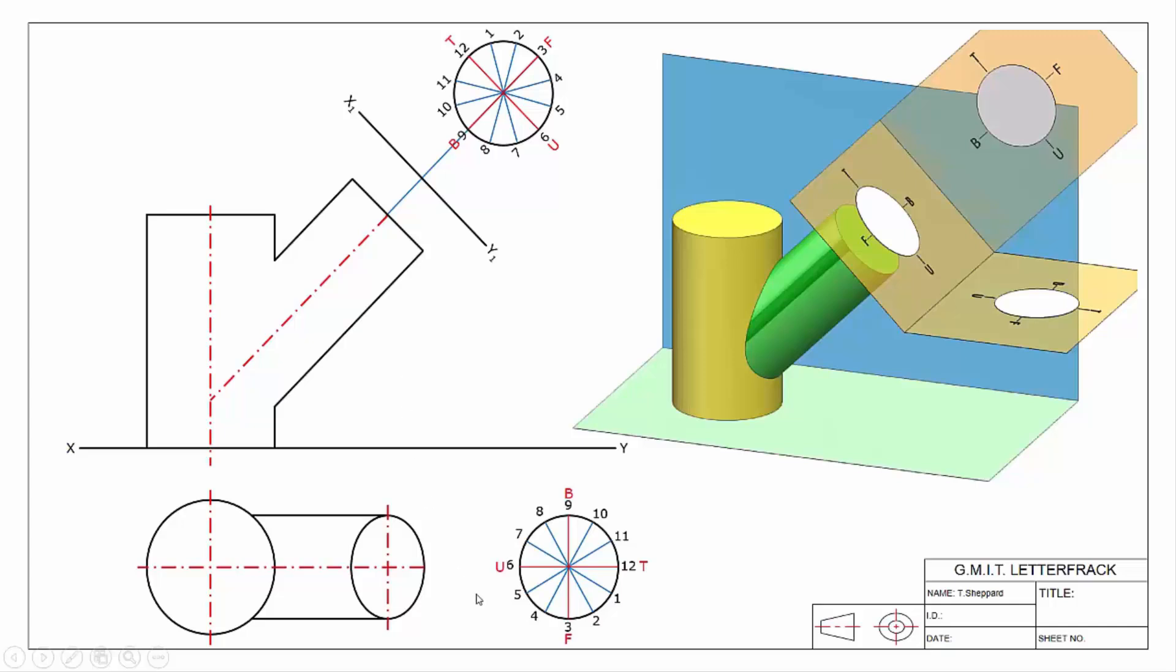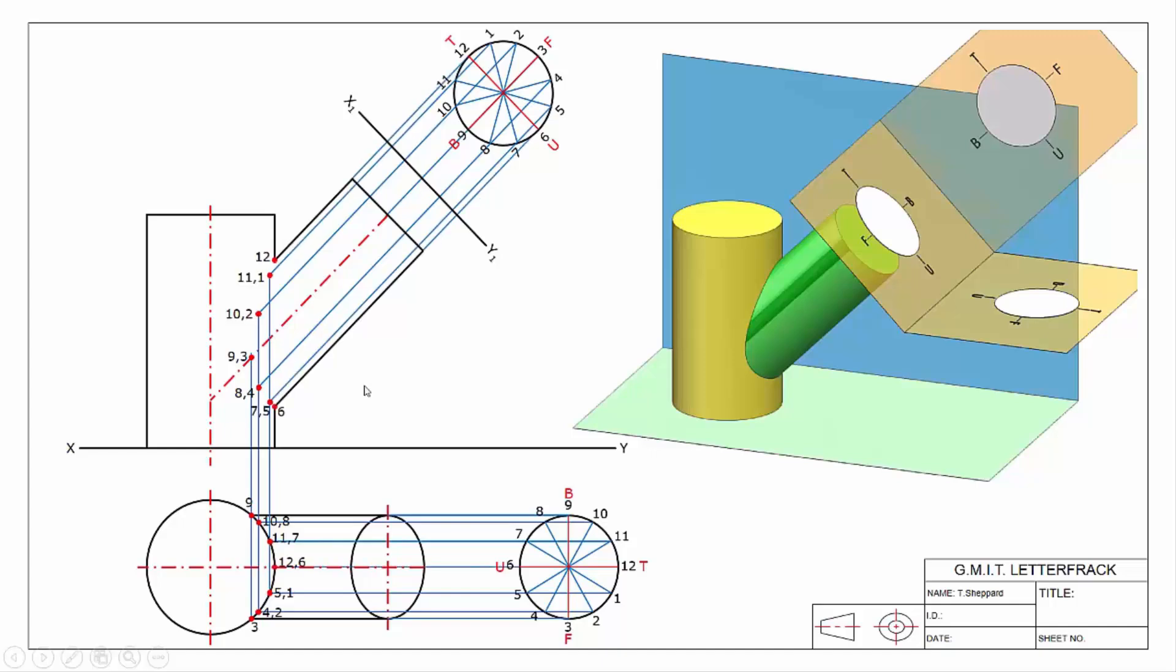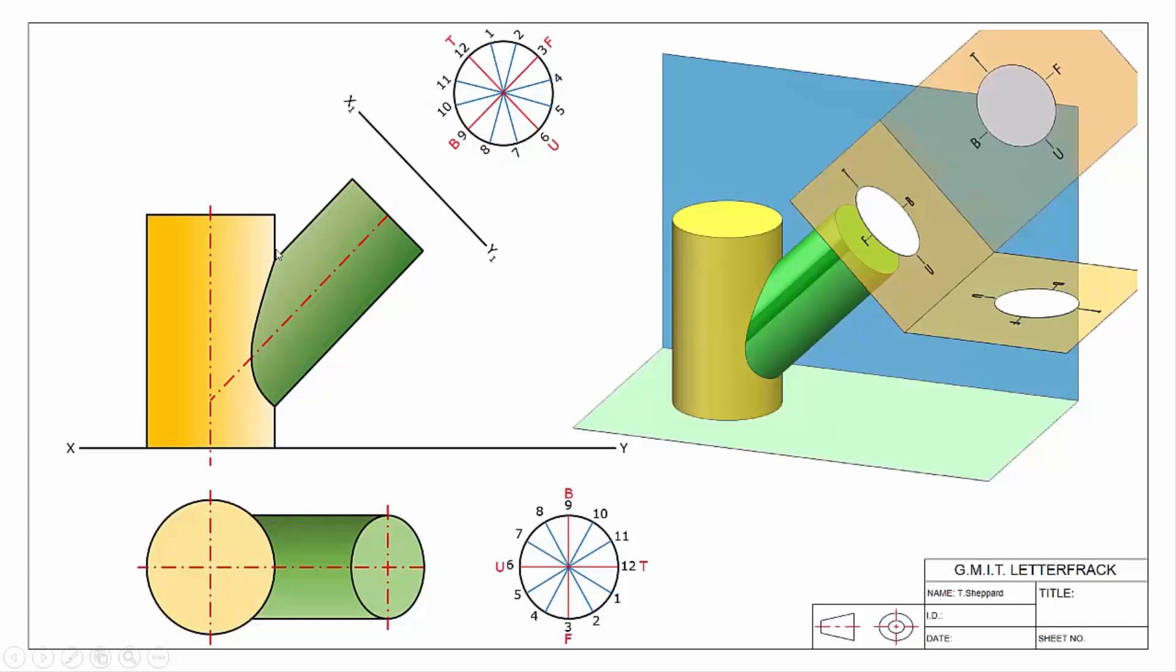Once we have that, then it's just a case of locating our curve of interpenetration. We project each of our points, so in this case 3 and 9. We locate them on our second solid, project them up, then we just project 3 and 9 down here to locate our point. We do that with each point. So 2 and 4 goes back, 10 and 8 goes back, we're bringing it up and we just project them down. We're literally corresponding or joining up the points from elevation and plan. We do the same with the rest of our points, and that gives us each of our points, giving us our curve of interpenetration on our saddle.